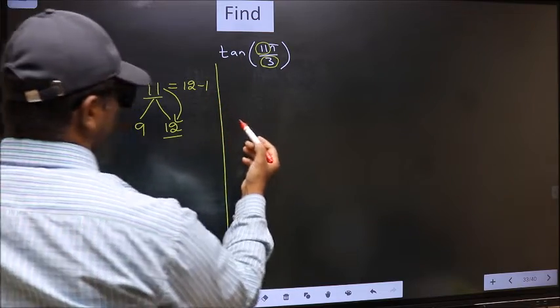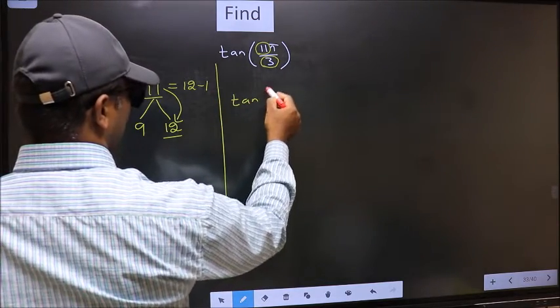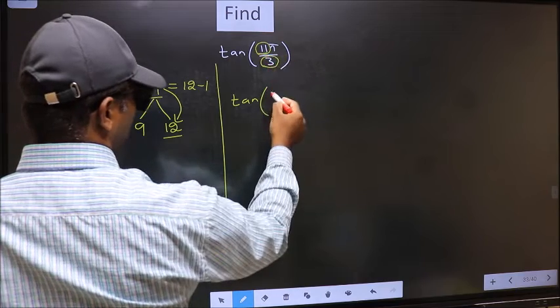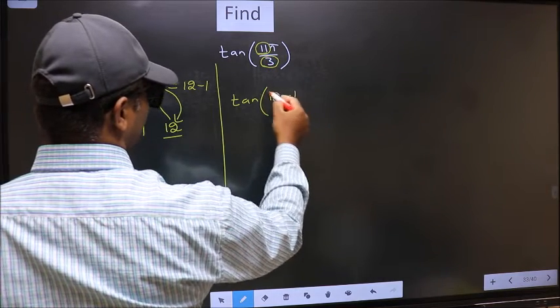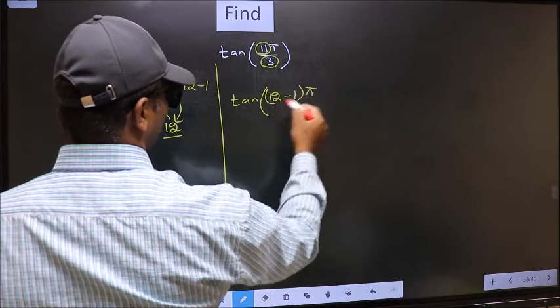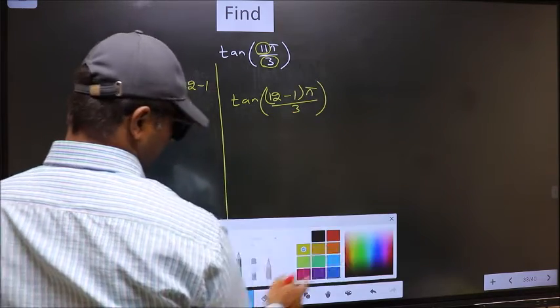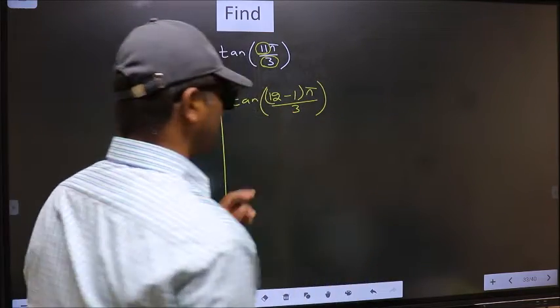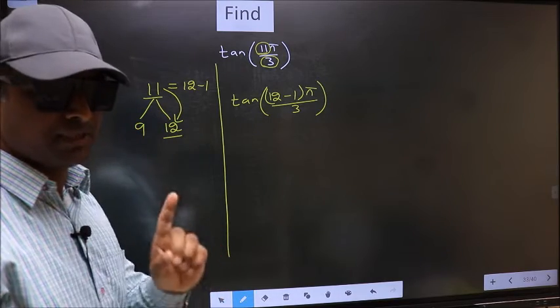So this will become tan. In place of 11, now I write 12 minus 1, π by 3. This is your step 1.